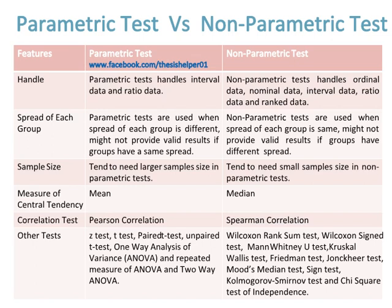Parametric tests tend to need larger sample sizes, while non-parametric tests tend to need smaller sample sizes. The measure of central tendency in parametric tests is the mean, while the measure of central tendency in non-parametric tests is the median.